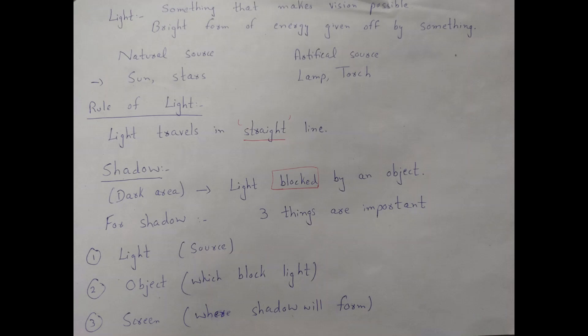Shadow is the dark area formed when light is blocked by an object. For a shadow, we need three main things: first, a light source — which may be natural like the sun or stars, or artificial like a lamp, torch, or candle. Second, there is an object which actually blocks the light. Third, there is a screen where we can see the shadow. And make sure that shadow always forms on the opposite side of the light.